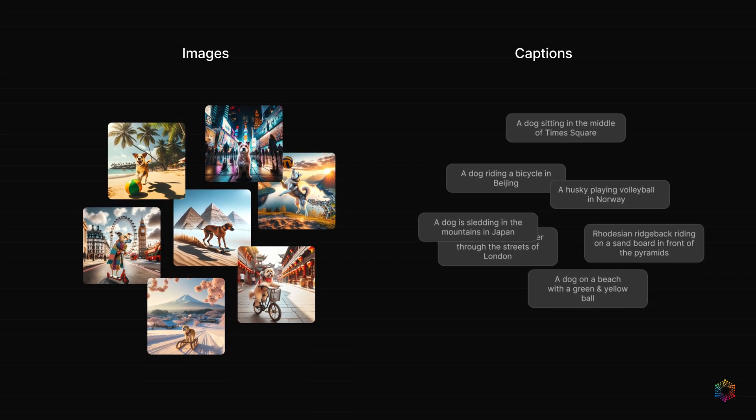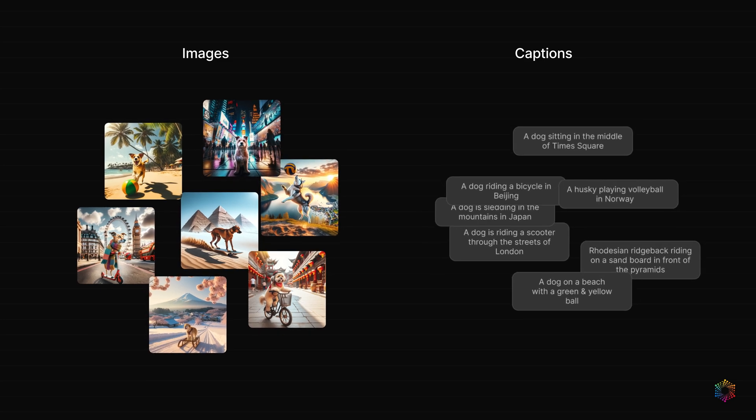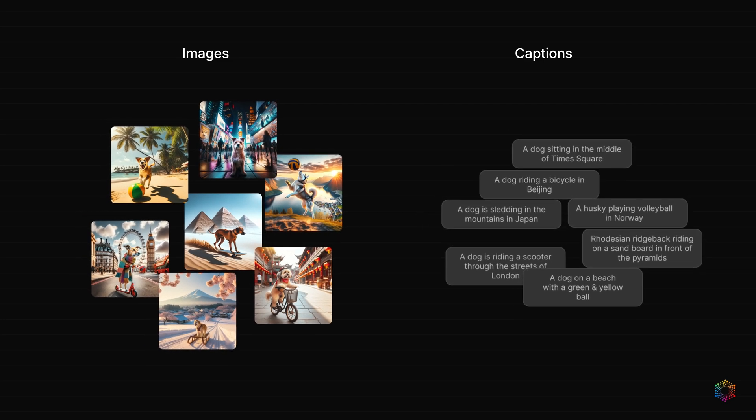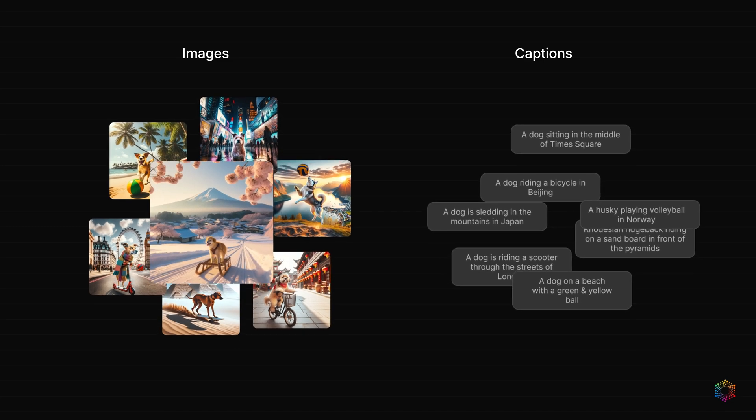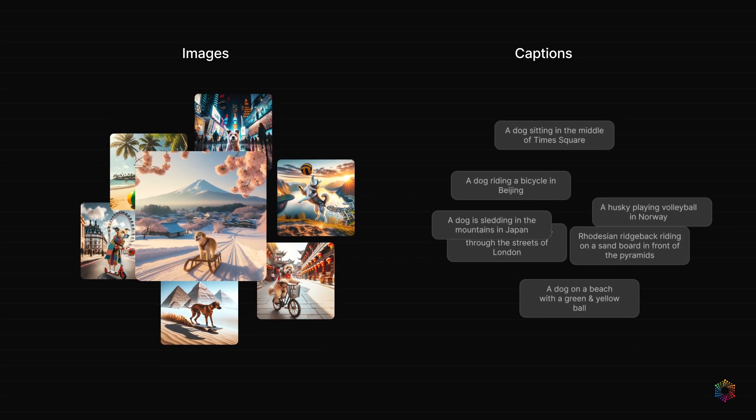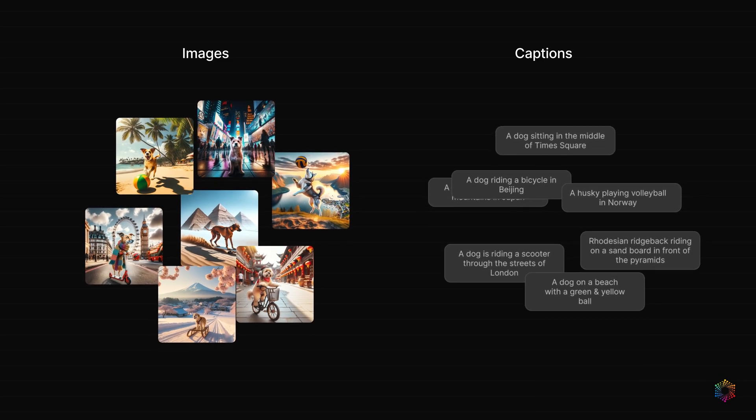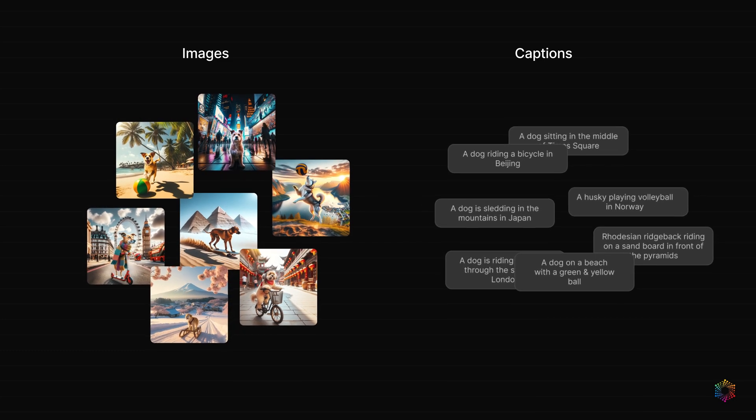We can still learn that images of dogs are associated with captions of dogs, but we're unable to describe the specific details of the image. We don't have the level of granularity that can tell us that this specific photo is of a dog sledding in Japan. Although this was just a thought experiment, you can see that without matching we lose a lot of shared information.